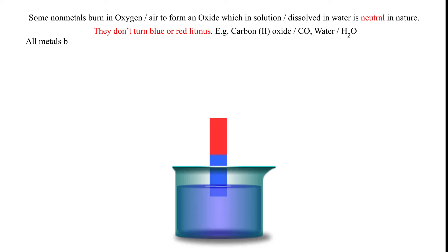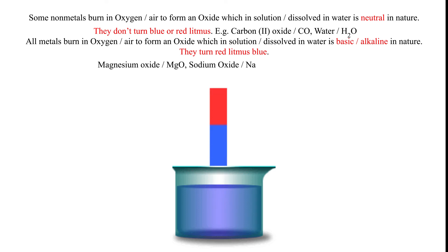Water. All metals burn in oxygen or air to form an oxide which, in solution or dissolved in water, is basic or alkaline in nature. They turn red litmus blue. Examples include magnesium oxide, sodium oxide, and copper oxide.